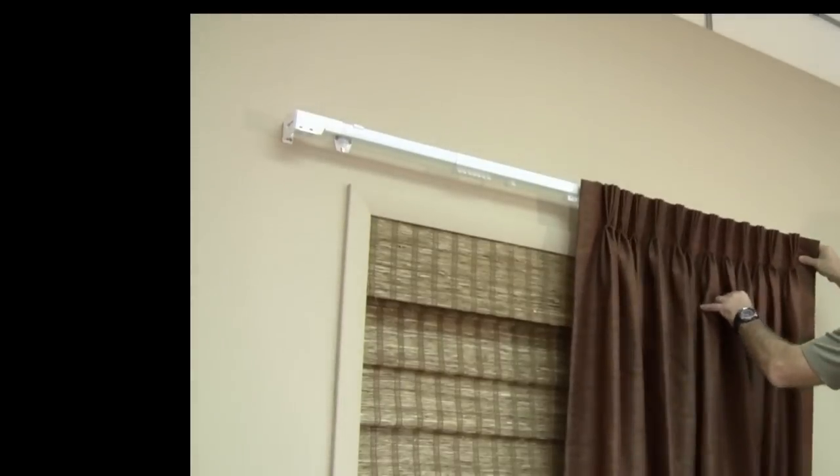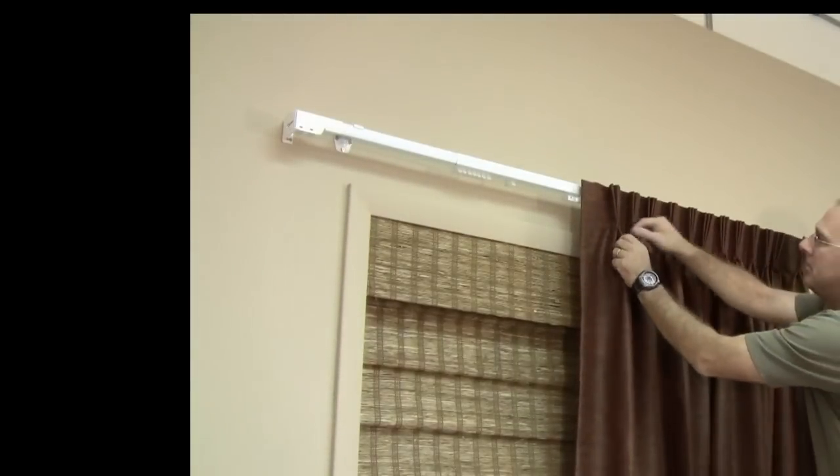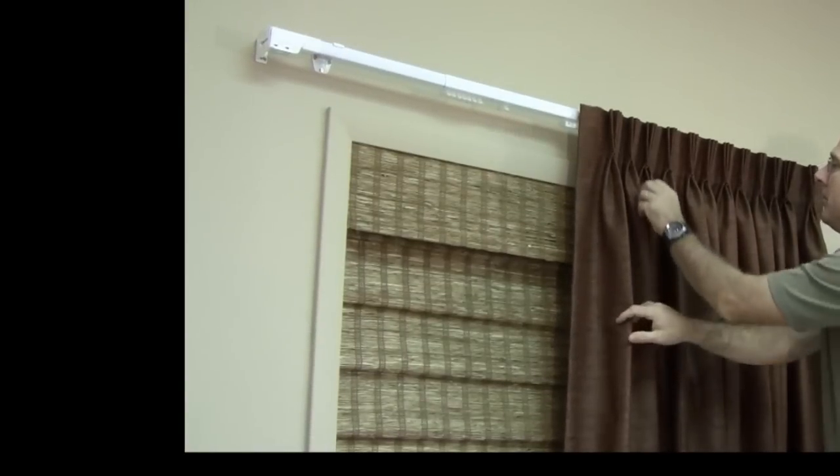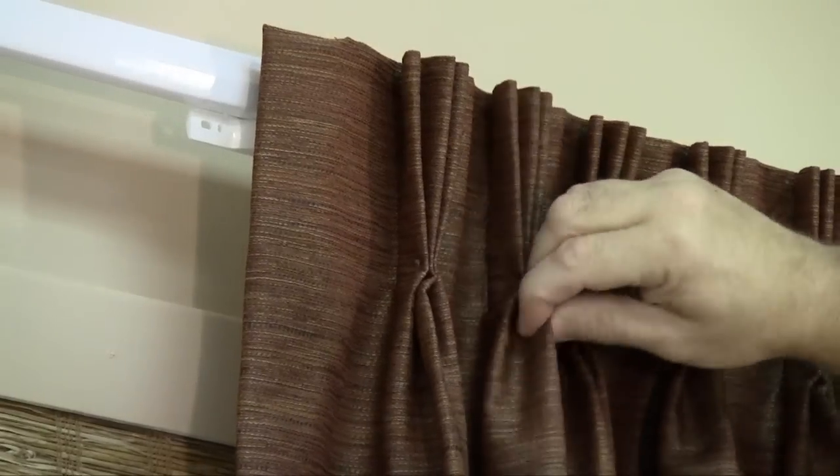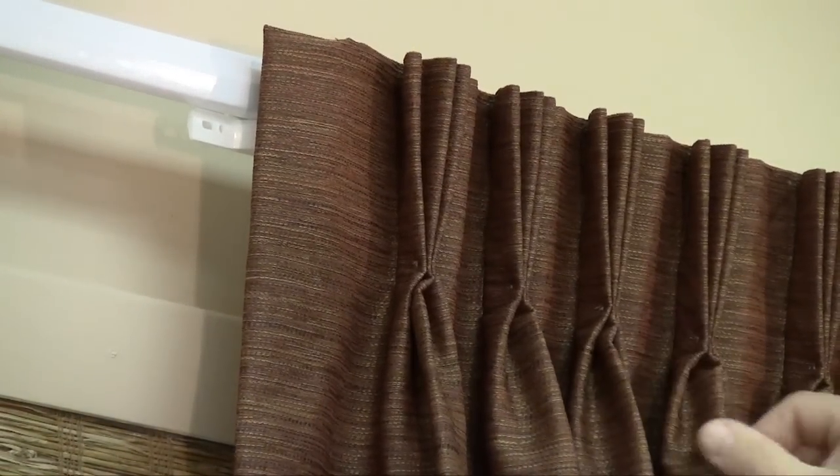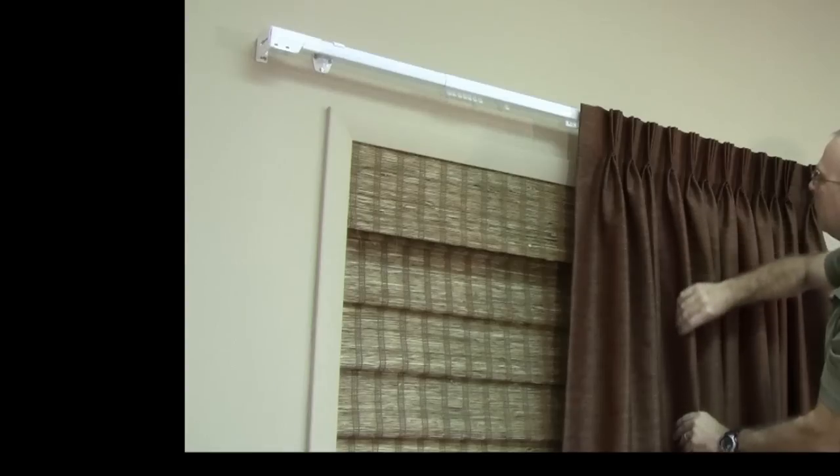Once the panels are pinned on the rod, some preliminary dressing is in order. Take care to straighten the pleats on the rod. Then pull the center of each pleat forward to position and accentuate the pleats. This action makes it easier to create beautiful folds during the final dressing stage.